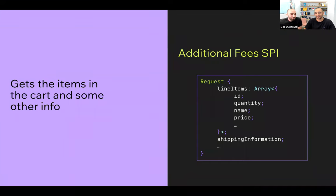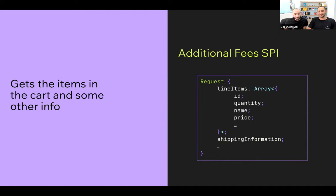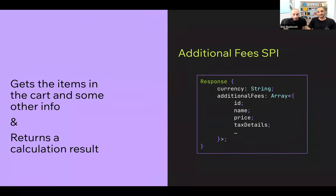When you implement the additional fees SPI, you basically implement a function that receives as arguments data about the cart, line items, shipping information, and a bunch of other stuff related to the current cart. You can find everything you need in the documentation — we'll post the link later. You'll need to return the list of additional fees you'd like to apply to that specific cart.